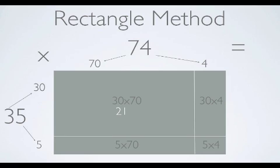There are two zeros in 30 times 70, so we'll add them, giving us a total of 2,100. Let's look at the other rectangle. 30 times 4. 3 times 4 is 12.